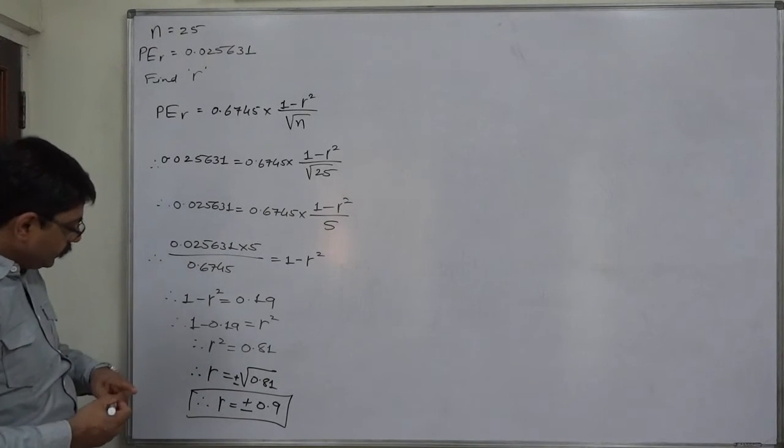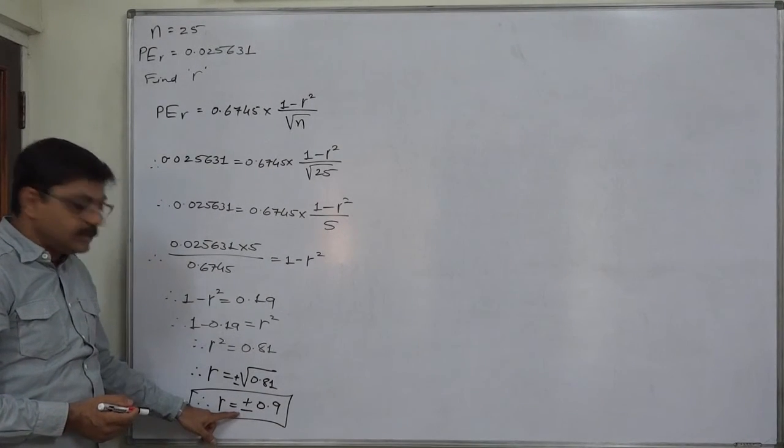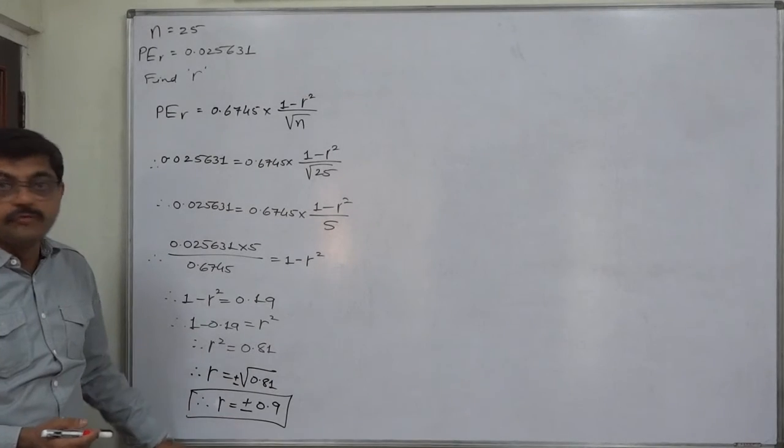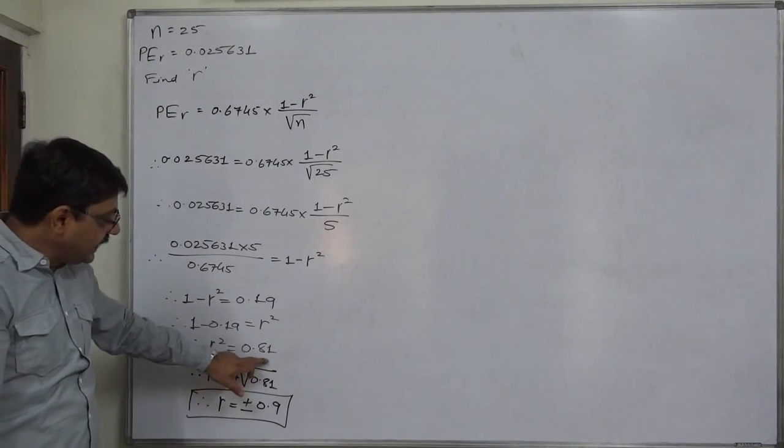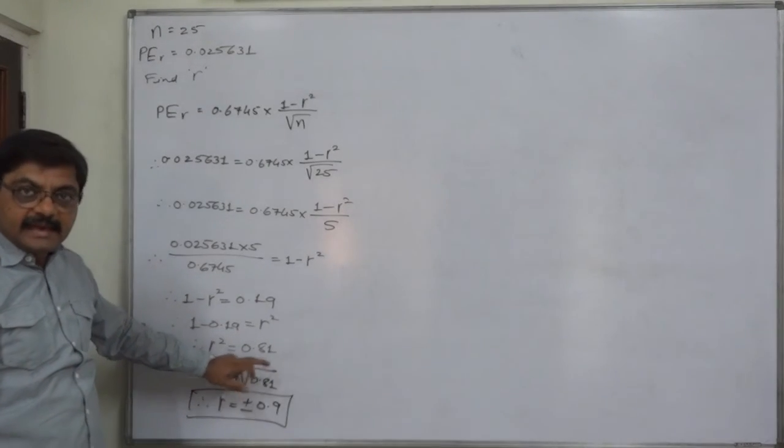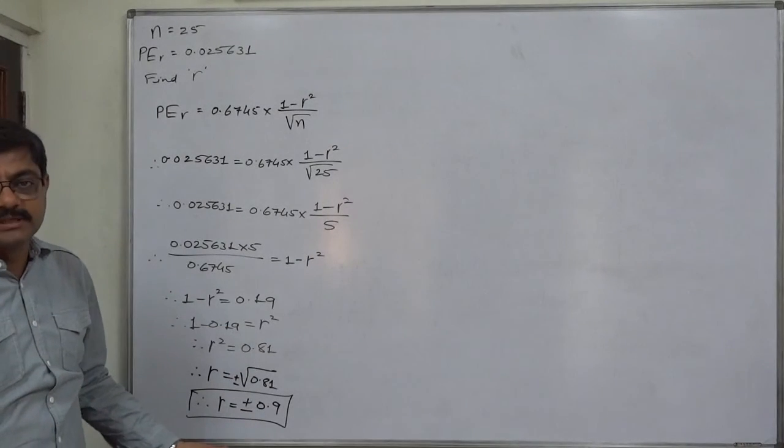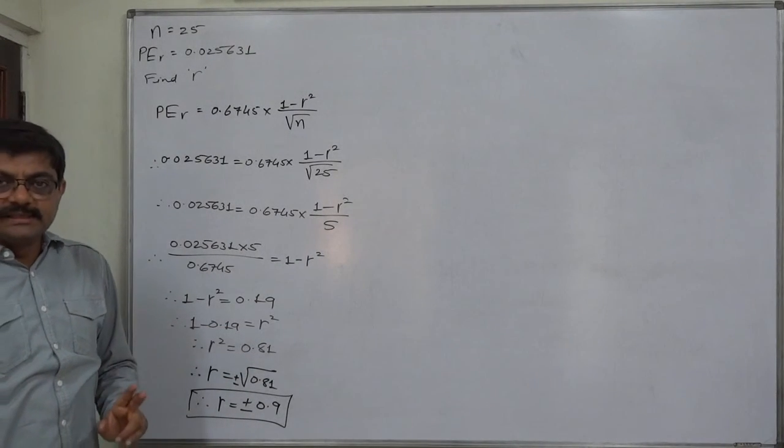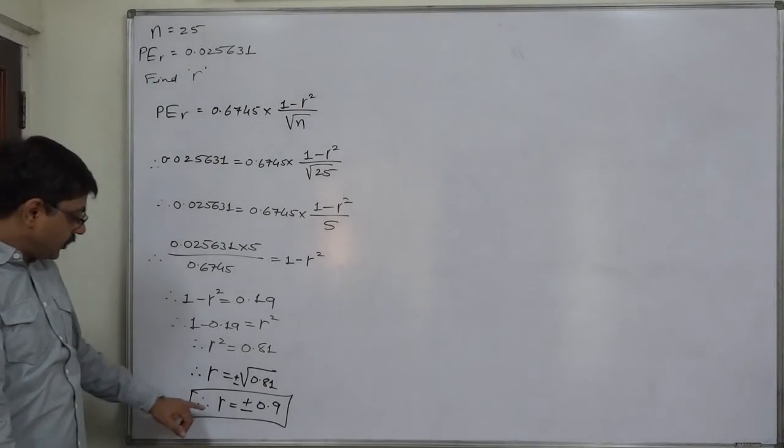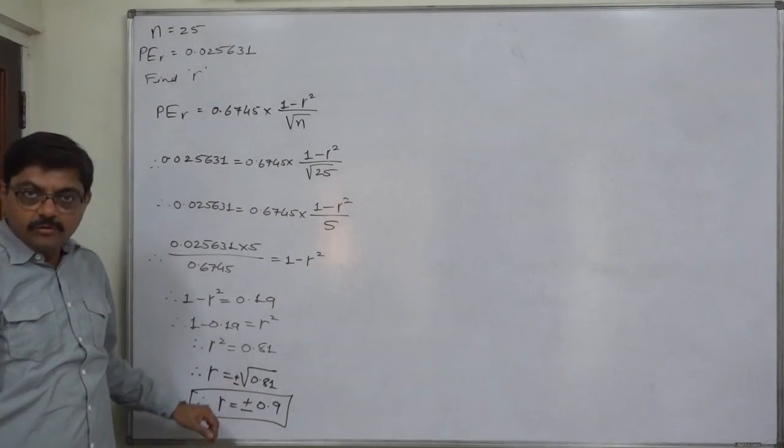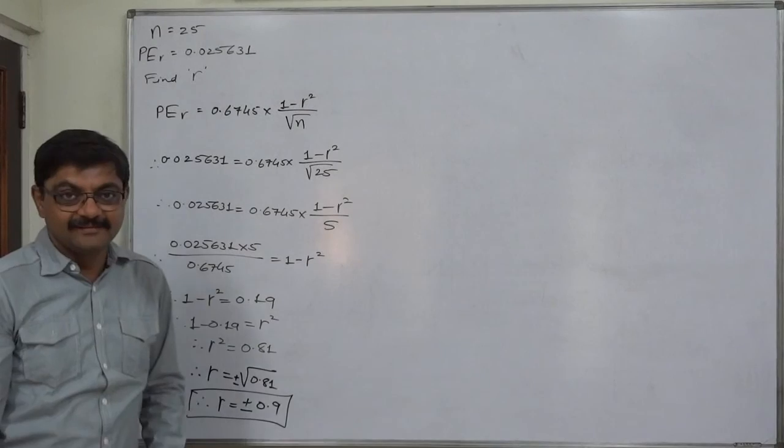Mind well, students, you need to write both signs, because we don't know if 0.81 is the squared value of -0.9 or +0.9. Both possibilities exist - the coefficient can take a negative or positive value. Thank you very much.